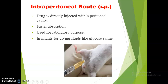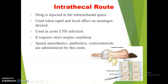The intraperitoneal route involves injecting the drug directly into the peritoneal cavity, which is the large cavity present over the abdominal surface. This route is mainly used for laboratory purposes, such as injecting drugs into laboratory animals, and sometimes for administering fluids like glucose and saline. The intrathecal route involves injecting the drug into the subarachnoid space — the space between the arachnoid mater and pia mater, which are coverings of the brain and spinal cord. The space between the second and third lumbar vertebrae is generally selected. This route is used for rapid and local effects on the meninges and in CNS infections. It requires strict aseptic conditions. Spinal anesthetics, antibiotics, and corticosteroids are administered by this route.